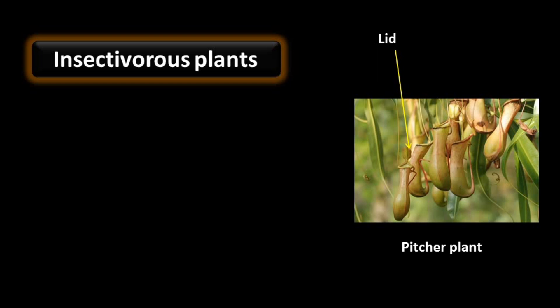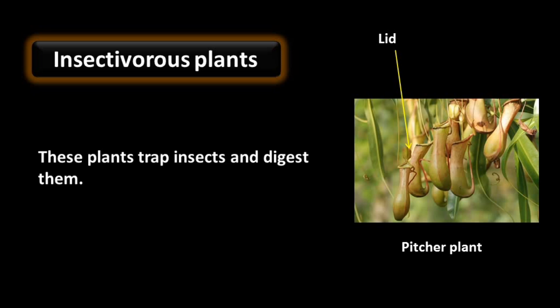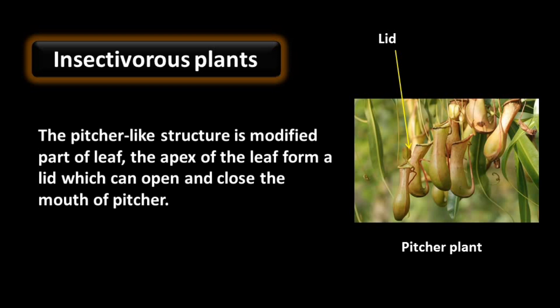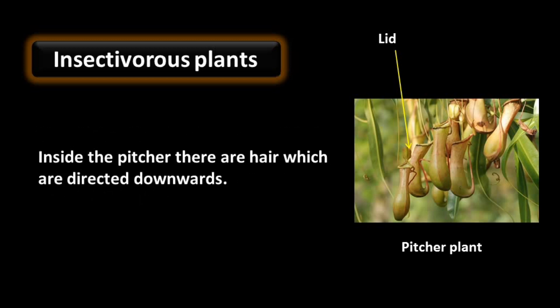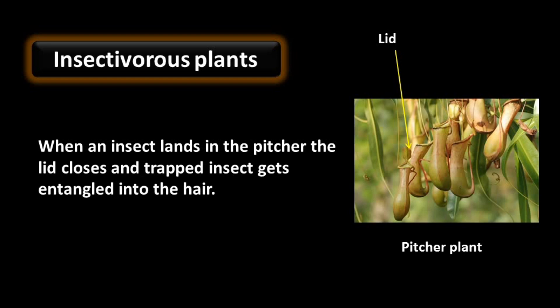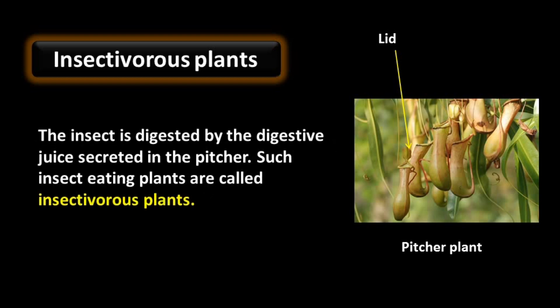Another example is insectivorous plants — insect-eating plants. Pitcher plant is an insectivorous plant that traps insects and digests them. The pitcher-like structure is a modified part of the leaf. The apex of the leaf forms a lid which can open and close the mouth of the pitcher. Inside the pitcher there are hairs directed downwards. When an insect lands in the pitcher, the lid closes and the trapped insect gets entangled in the hairs. The insect is digested by digestive juice secreted in the pitcher.